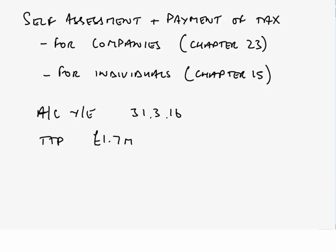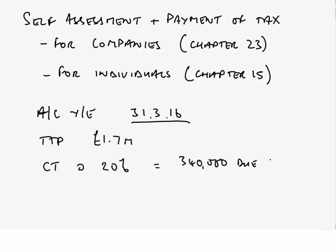We are informed the company is a single company without any related 51% group companies, meaning its profit limit is the basic £1.5 million. This is the first time we have had a profit in excess of £1.5 million — meaning for the immediately preceding accounting period, the year ended 31st March 2015, we were not large. So we are not required to make quarterly instalment payments for the year ended 31st March 2016. That TTP of £1.7 million would be charged to corporation tax at the uniform rate of 20%, giving a liability of £340,000, due nine months and one day after the end of the accounting period — i.e. the 1st of January 2017.